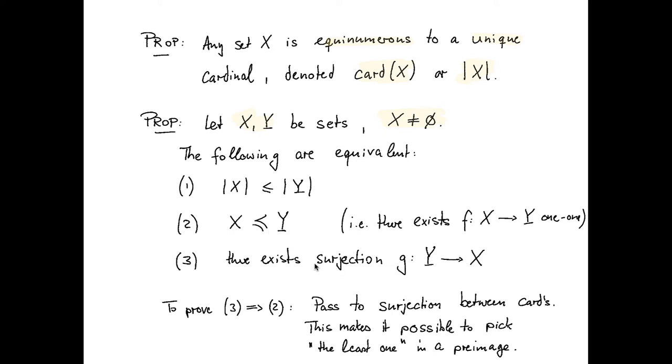Think a little bit how you prove the direction three to two. The idea here, as a hint, is to pass to the corresponding surjection between cardinals, because both have cardinals associated with them, and this makes it possible to pick the least one in a pre-image.